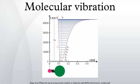The frequency of the periodic motion is known as a vibration frequency, and the typical frequencies of molecular vibrations range from less than 10^12 to approximately 10^14 Hz.